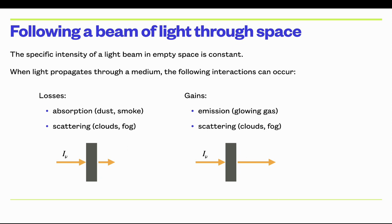You can also have gains. If a dust or gas layer is heated up, it will glow through emission processes, as we'll see in glowing nebulae. Scattering can also be a source of gain — if a ray comes in from one direction and scatters off a particle into your line of sight, it adds radiation. So scattering can both remove or add radiation to a particular direction you're observing.